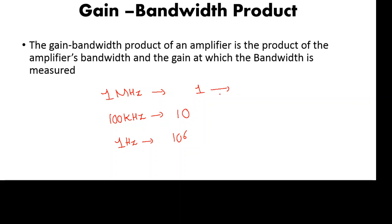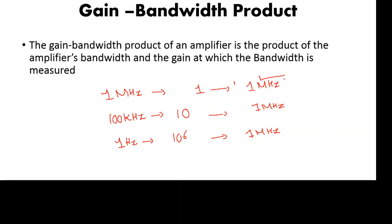Now if you take the product of gain and frequency in each case: 10⁶ × 1 Hz = 1 MHz; 10 × 100 kHz = 1 MHz; 1 × 1 MHz = 1 MHz. So although we have different gains at different frequencies, the product of gain and bandwidth is always the same. This is called the gain bandwidth product.